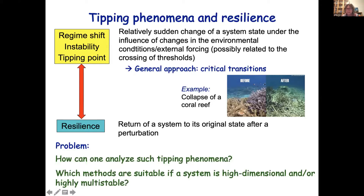I picked the example of a collapse of a coral reef, where before the critical transition you have the coral reef intact, and then after the transition it is overgrown by algae.